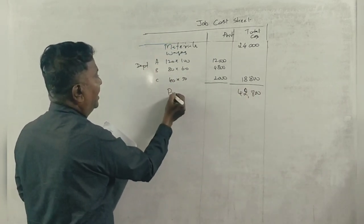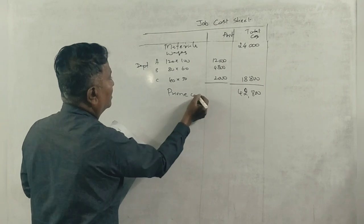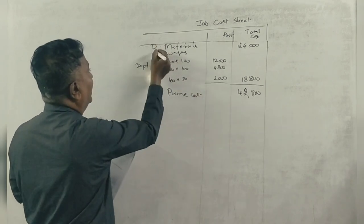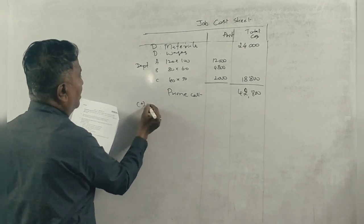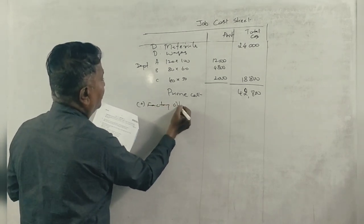This is called prime cost. Prime cost is direct material plus direct wages. Next, factory overheads.